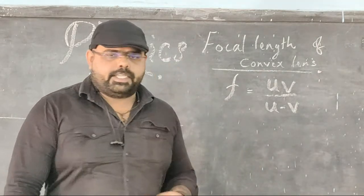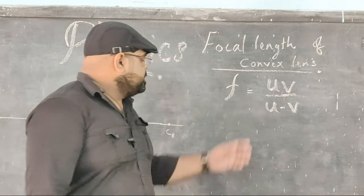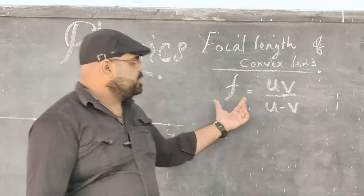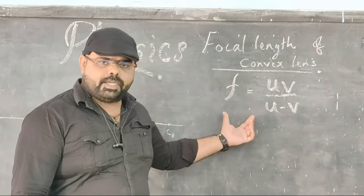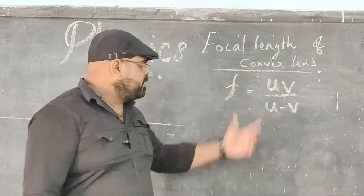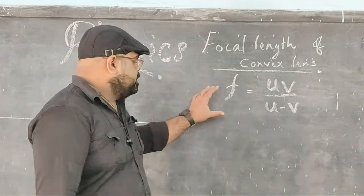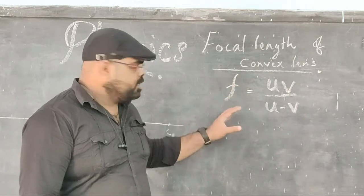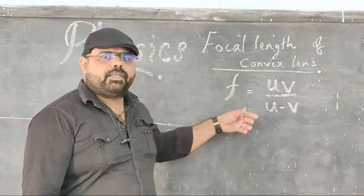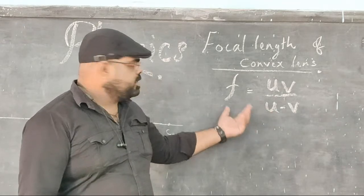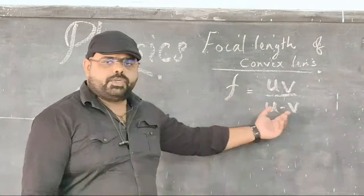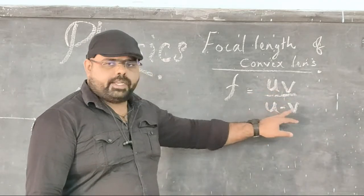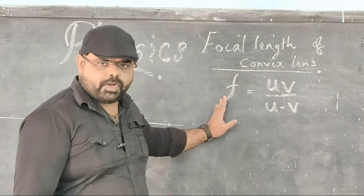Before diving into the experimental procedure, let us look at the equation we use here. This equation is derived from the lens formula: 1/F = 1/V − 1/U. We rearrange this to F = UV / (U − V), and by substituting the values of U and V, we will get the focal length.